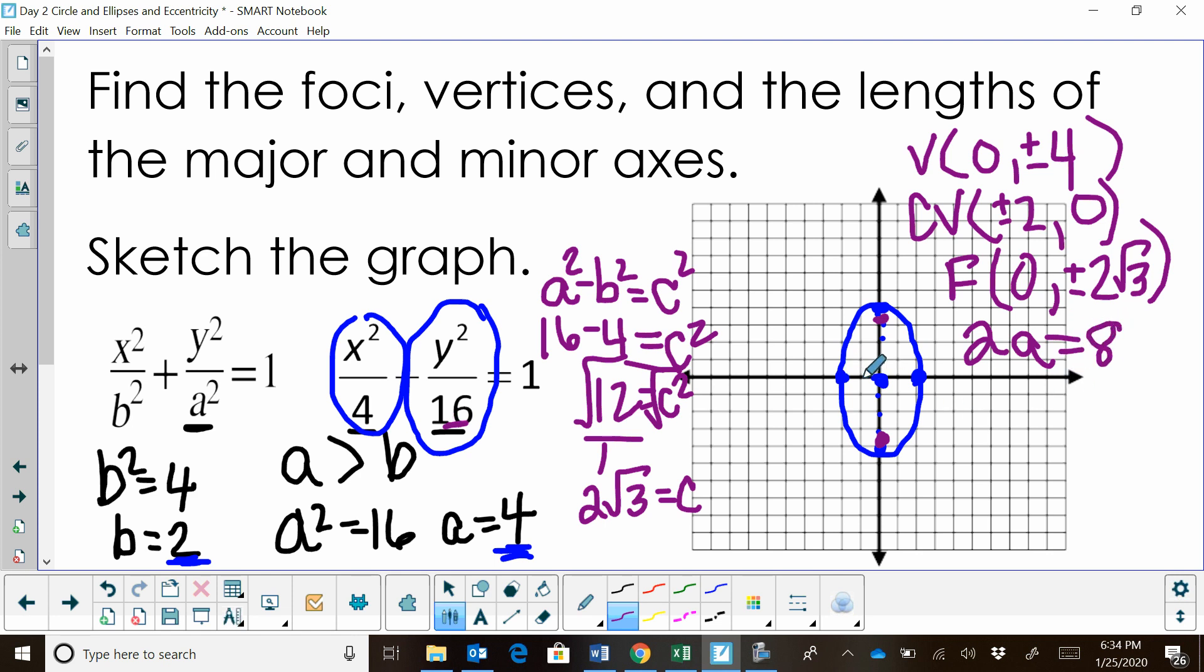My minor axis is from the center to b, or my co-vertex, which means it's 2 times b, because it's this entire distance. That means it's 2 times 2, which is 4.